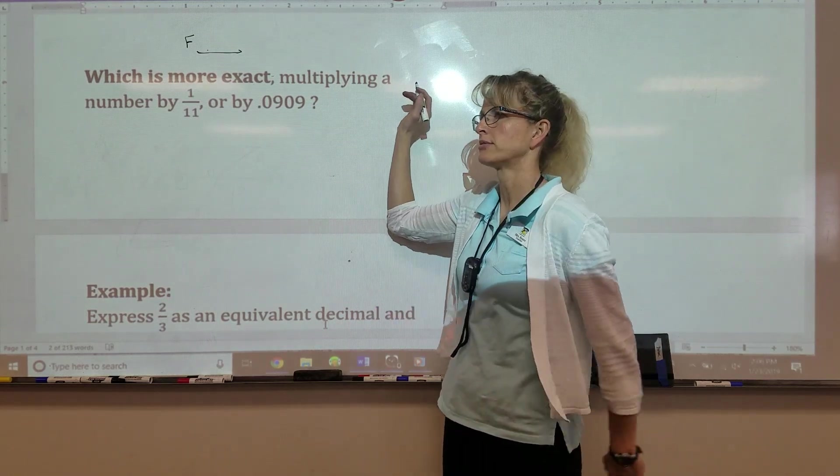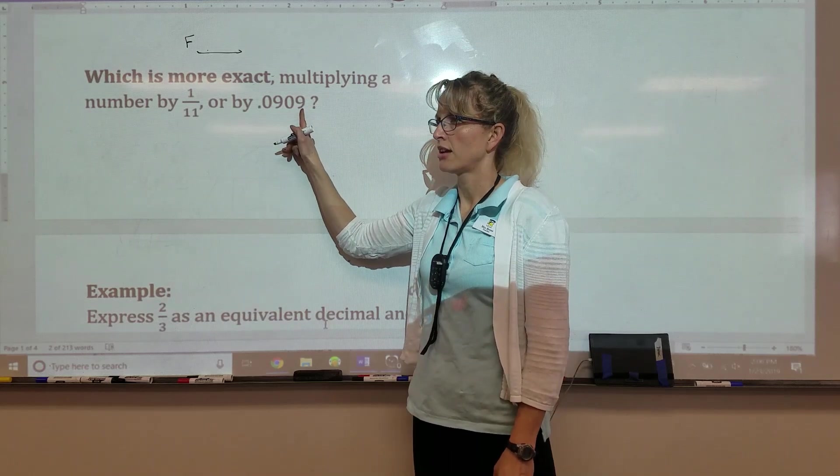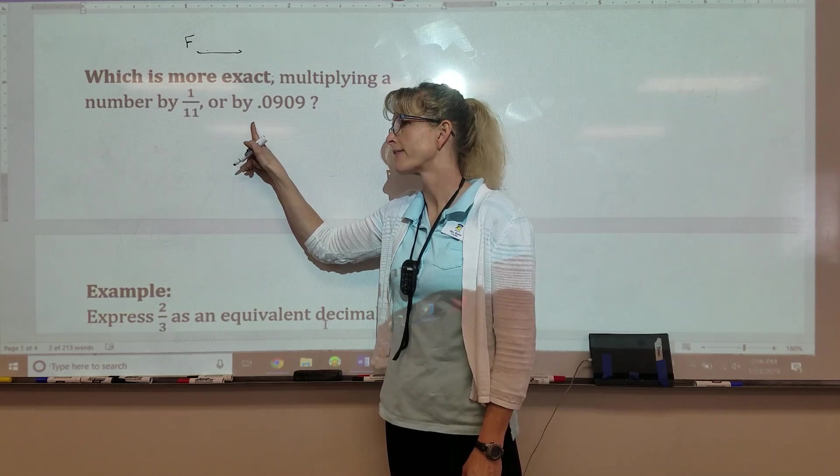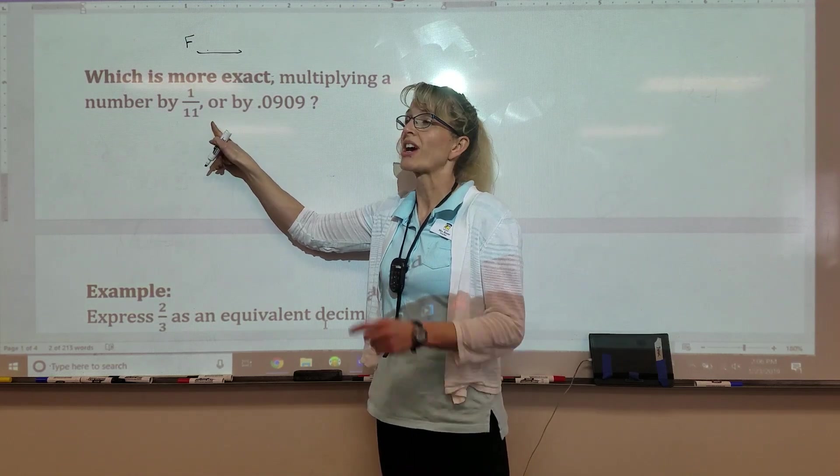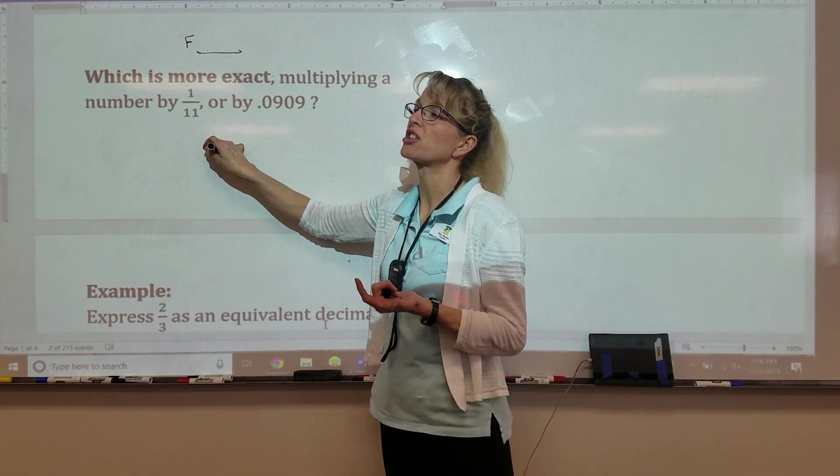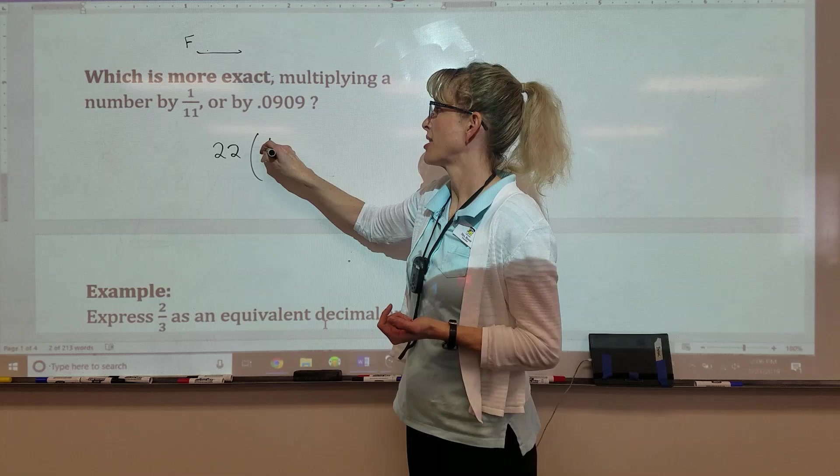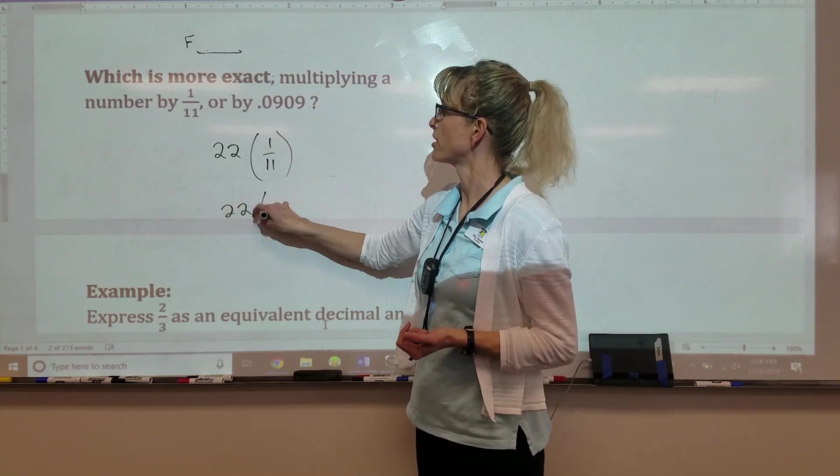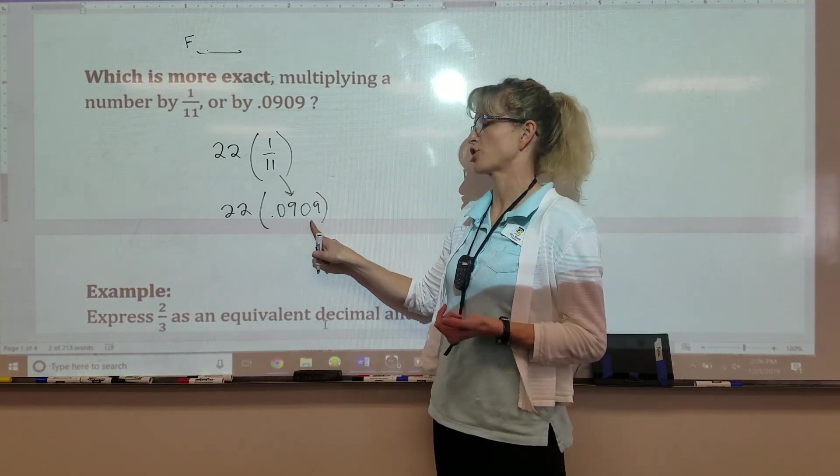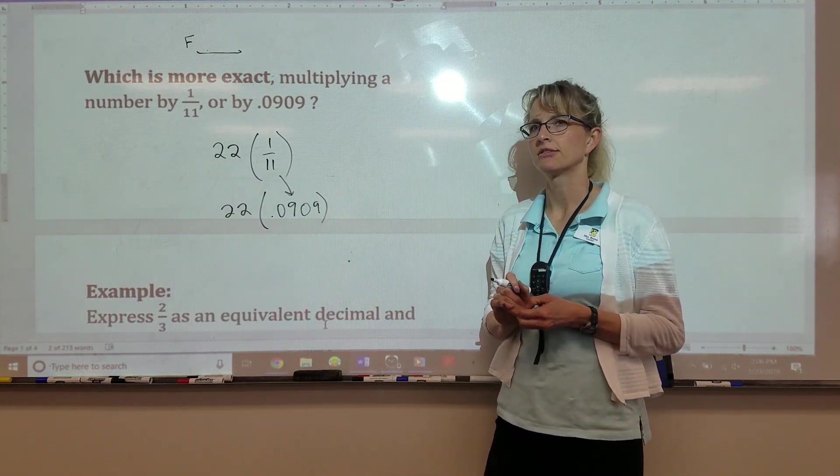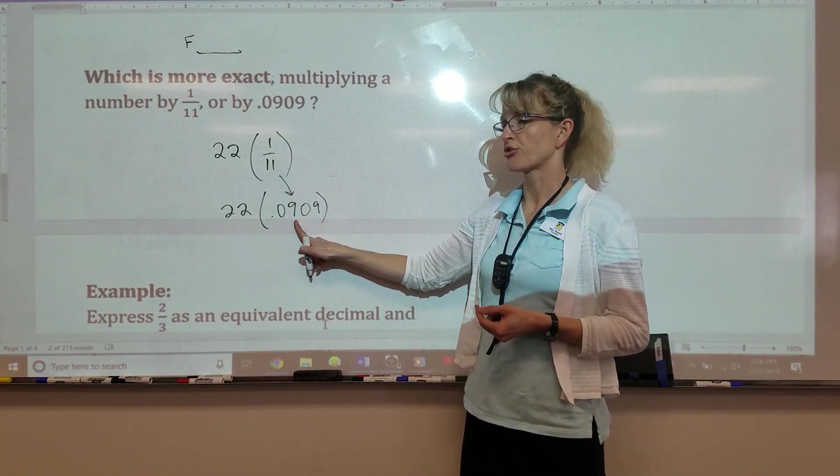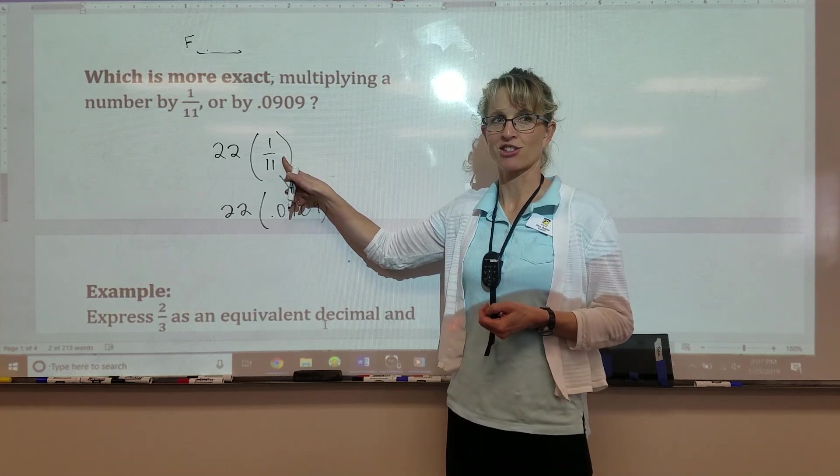What do you think, Colin? It matters if you need to multiply it by 0.0909, which one's more accurate? Say you're going to multiply it by 22. Am I going to get a more accurate answer this way, or the rounded, close version of 1 eleventh? Let's say my choices are a close approximation or a fraction. Samantha?